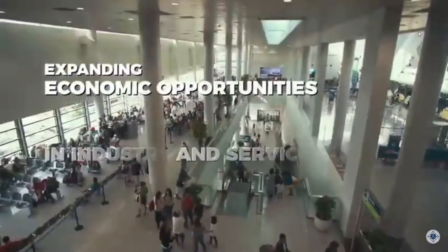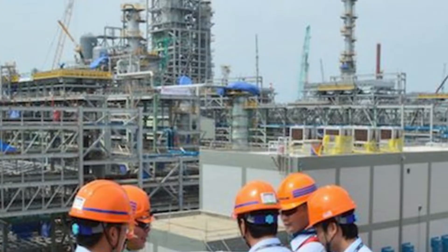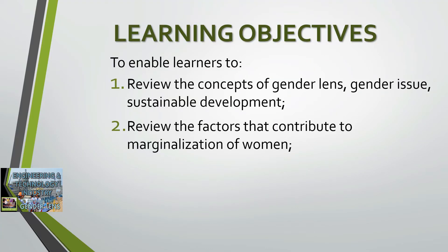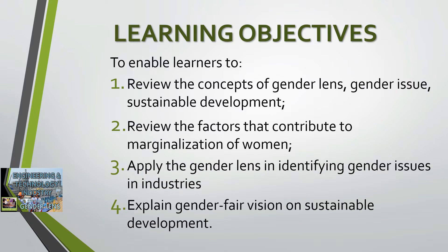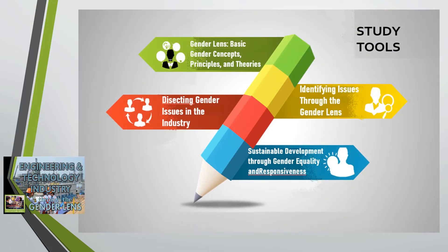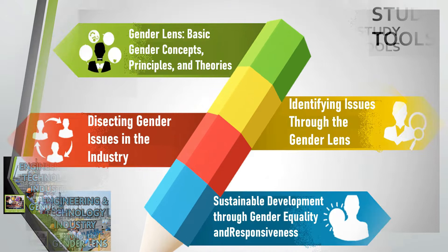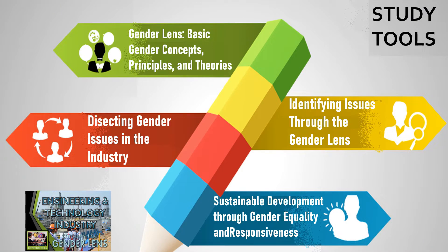At present, the slow growth of the economy is due to many complex issues, and these include gender. In examining this industry through the gender lens, learners will be able to define and apply the concepts of gender lens, gender issue, and sustainable development; enumerate the factors that contribute to marginalization of women in this industry; apply the gender lens in identifying gender issues; and explain gender-fair vision on sustainable development.